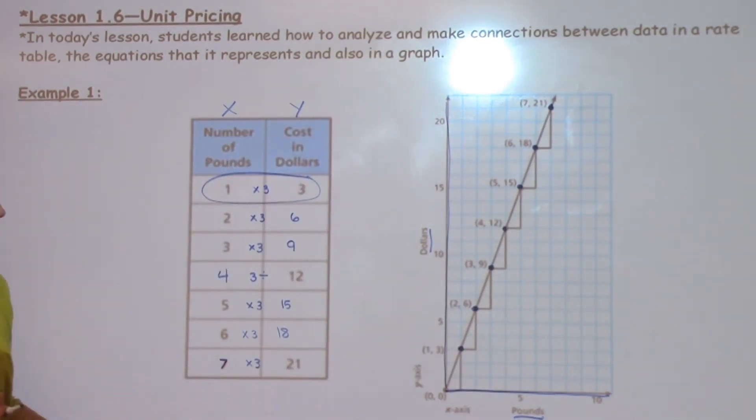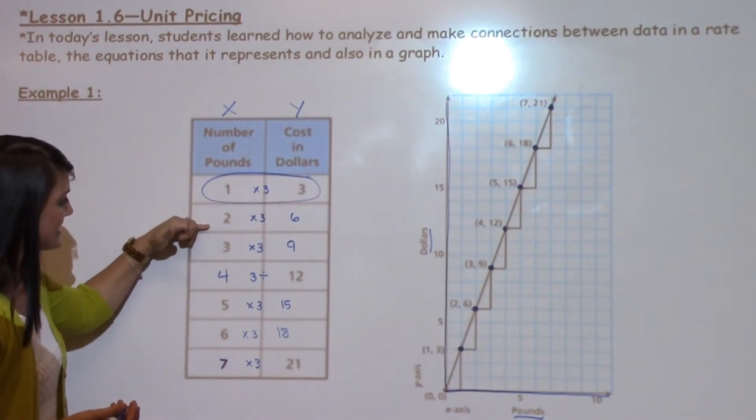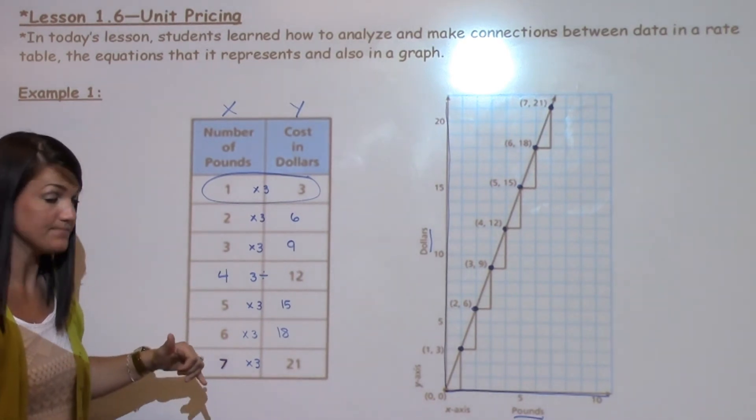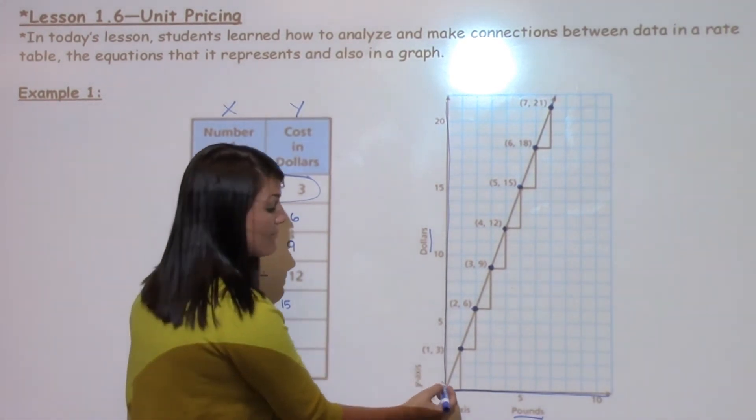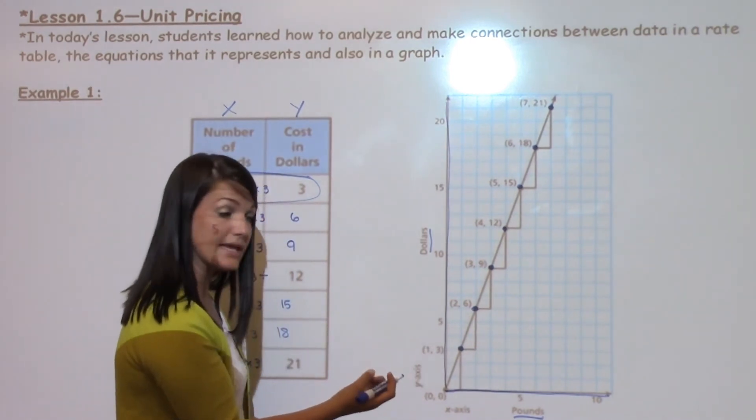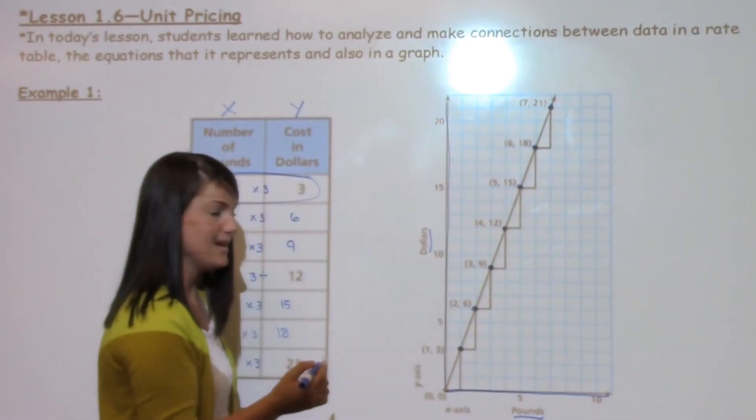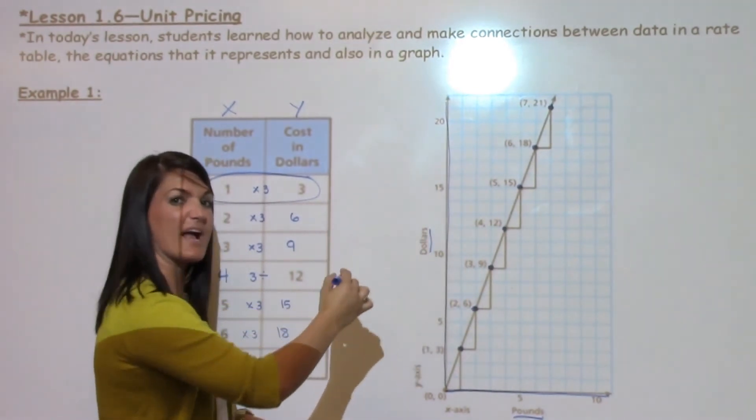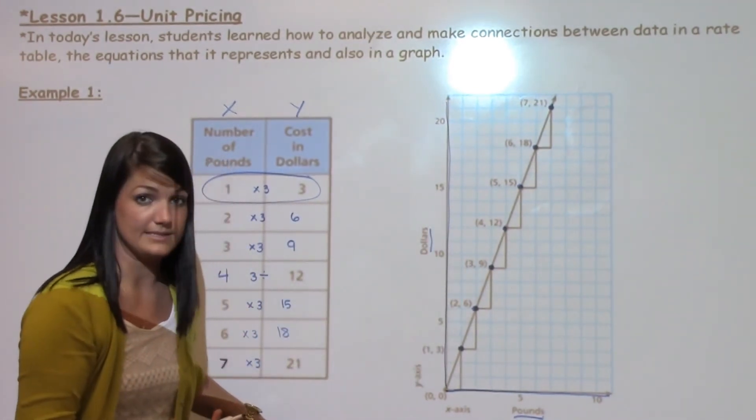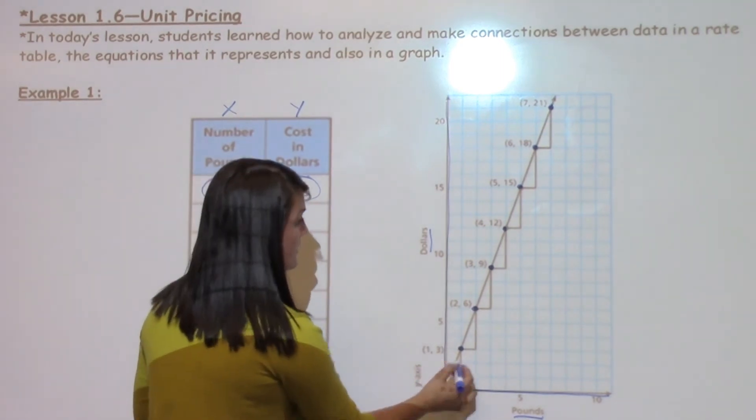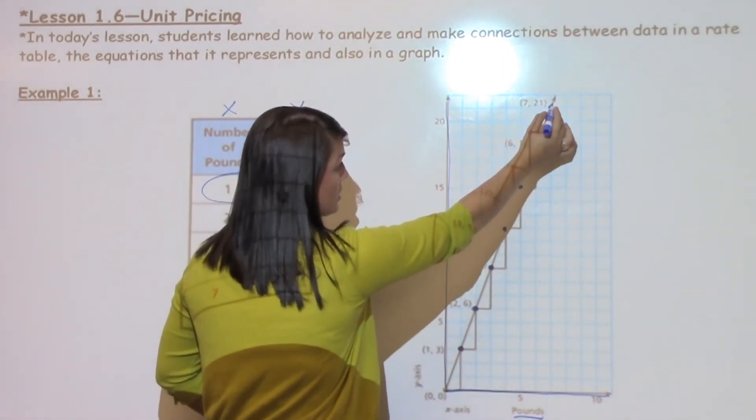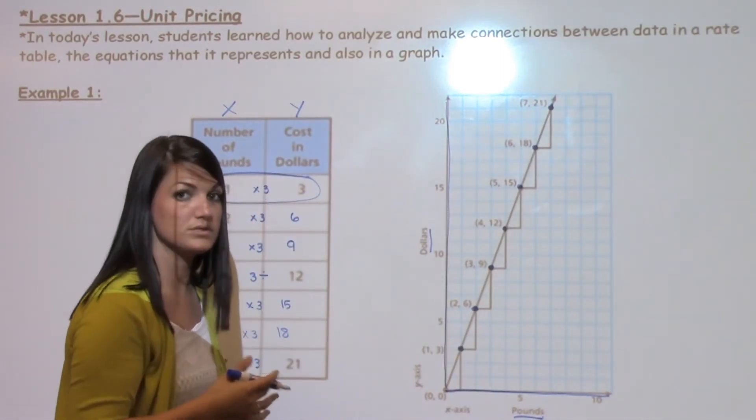Now, one connection students can make is that they see that this is a constant rate times 3. A constant rate on a graph, you should be able to see it pretty easily because it's going to show a line moving at the same direction. If it was a line that was zigzagging back and forth, that wouldn't show a constant rate. But this is gradually getting larger and increasing, and so it shows a constant rate.